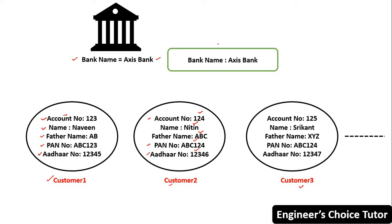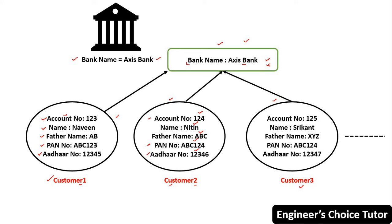One more point: the bank name is Access Bank. All these customers belong to Access Bank — the bank name is the common thing here. The bank name field has a common value, Access Bank, which is shareable to every customer object. Because all customers belong to Access Bank only, the bank name field should be declared as a static variable. We will discuss static variables in more detail later.